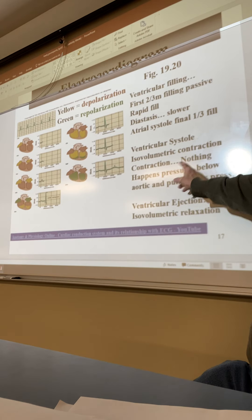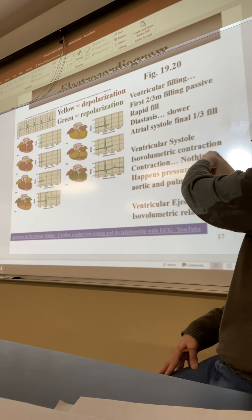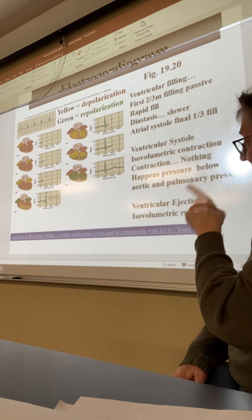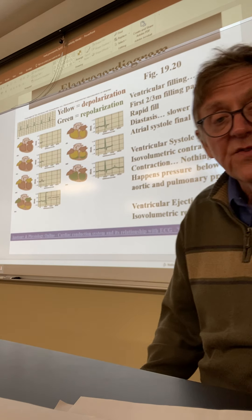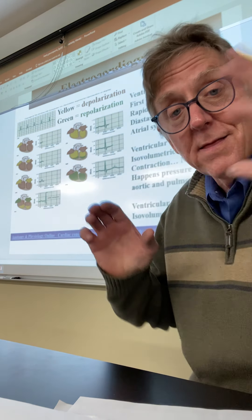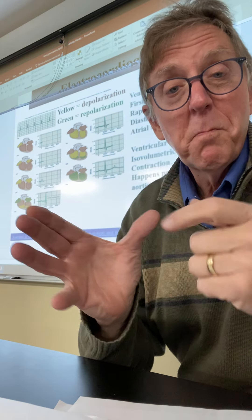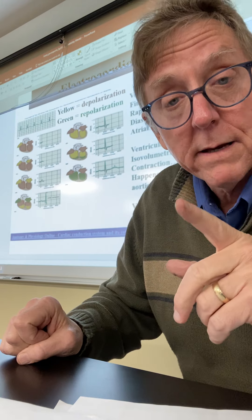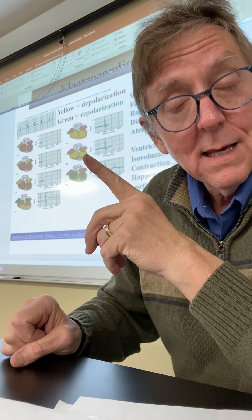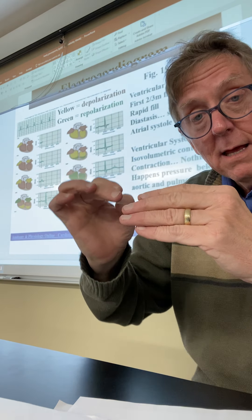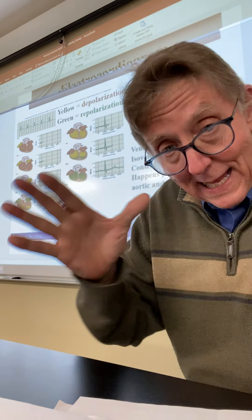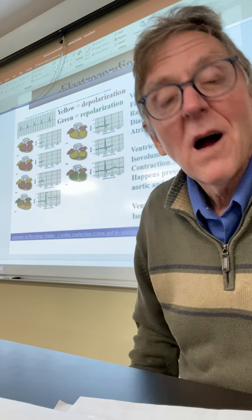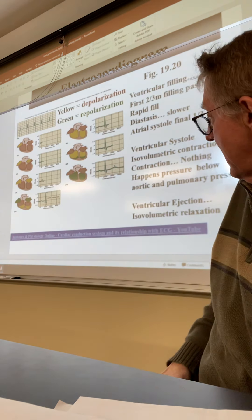We have ventricular systole — isovolumetric contraction. Nothing happens until you exceed the pressure in the arteries. And then the ventricle is pushing harder and harder, making that pressure in the arteries spike to 120. 120 over 80 — it's all tied in with the heartbeat. All right, I've gone 11 minutes, we'll stop right here.